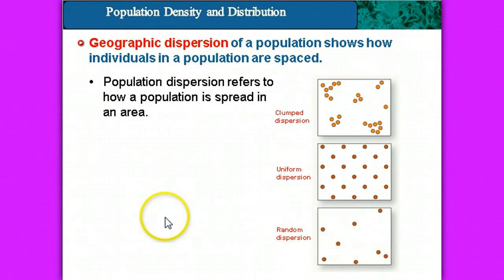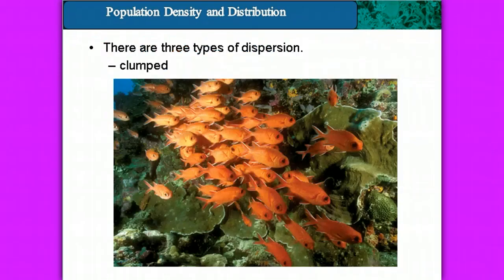Make sure that you label those on your note sheet. Now let's take a look at some examples in real life. There are three different types of dispersion. This picture — the school of fish — shows a clumped dispersion. Clumped dispersion is typical in an ocean ecosystem because a lot of these populations of fish will group together to avoid being caught by predators.